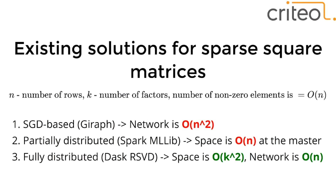The third approach, which works for almost arbitrarily large matrices, is randomized SVD, available in Dask. It requires only quadratic-in-k space on the driver, and its network communication is linear or almost linear — roughly proportional to the number of non-zero entries in the matrix. The problem with Dask was that it couldn't actually scale to our particular dataset; the approach was correct but the implementation didn't work for us, so we implemented randomized SVD ourselves in Spark.